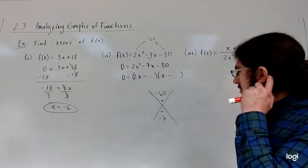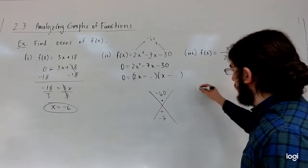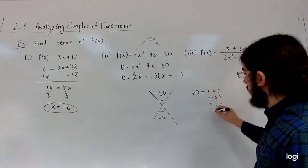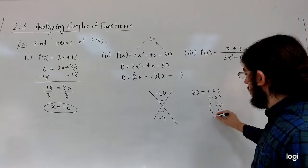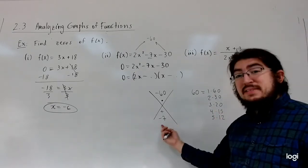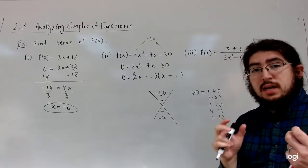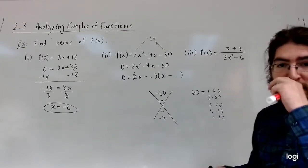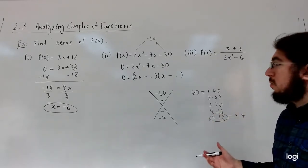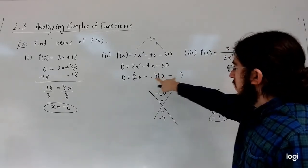The two numbers that work: 60 equals 1 times 60, 2 times 30, 3 times 20, 4 times 15, 5 times 12. We're looking for the difference of these numbers because we want them to add to negative seven and multiply to negative 60, so the signs must be different. Notice the difference between 5 and 12 is 7, so the numbers we're going to work with are 5 and 12.